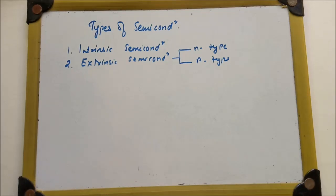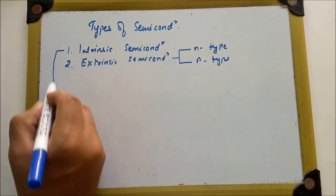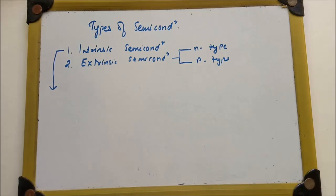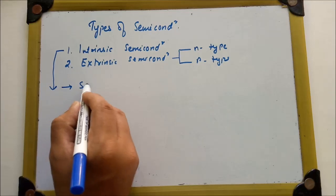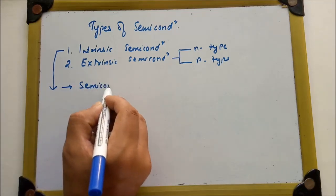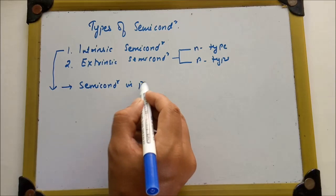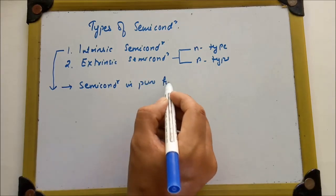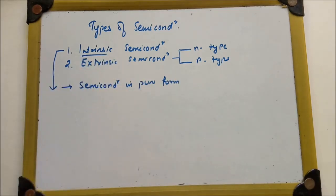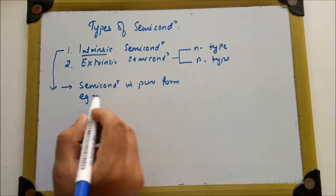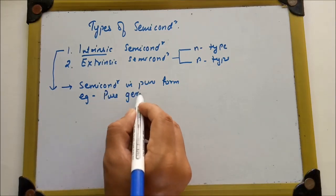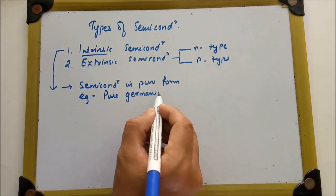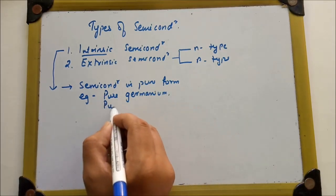Intrinsic semiconductor means it is in pure form. A semiconductor in pure form is known as an intrinsic semiconductor. Examples of intrinsic semiconductors are pure germanium and pure silicon.